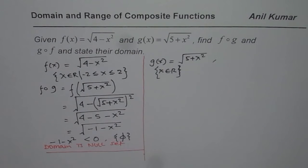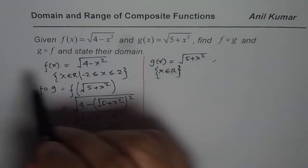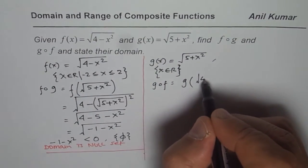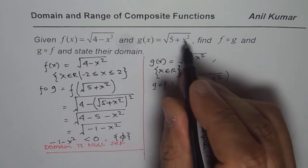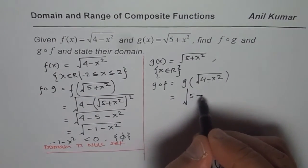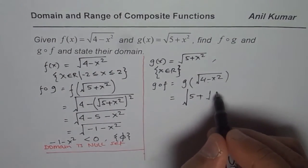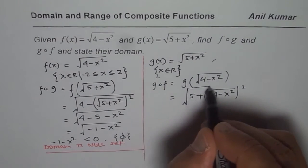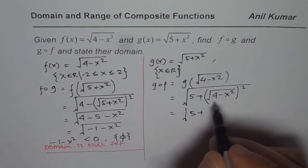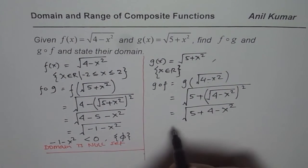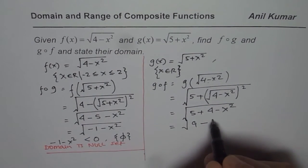Now let's look at the other composite function, which is g of f. g of f means g of (square root of (4 minus x squared)) — we substitute f(x) into g(x). So we get square root of (5 plus (square root of (4 minus x squared)) squared). When you square the square root, you get square root of (5 plus 4 minus x squared), which equals square root of (9 minus x squared).